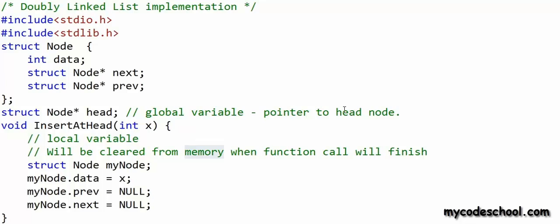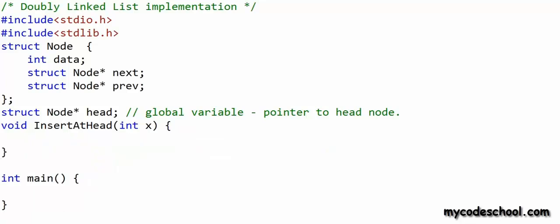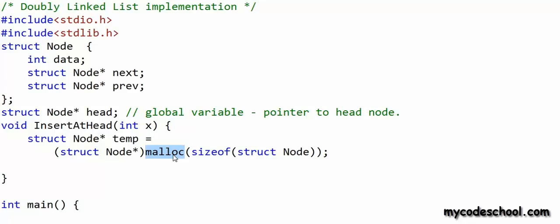A local variable lives in what we call the stack section of the application's memory, and we cannot control its lifetime — it's cleared when the function call finishes. Our requirement is that a node should stay in memory unless we explicitly remove it. That's why we create a node in dynamic memory, or what we call the heap section of memory. Anything in heap is not cleared unless we explicitly free it. To create a node in heap, we use the malloc function in C or the new operator in C++. All malloc does is reserve some memory in heap that can be used for any variable or object.